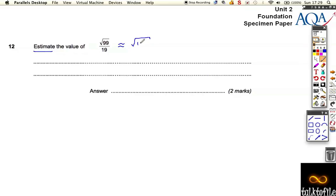me an answer quite close to the answer for square root of 100, and divide by 19 - sorry, not the square root, just divide by 19 - is going to give me a similar answer if I divided by 20.